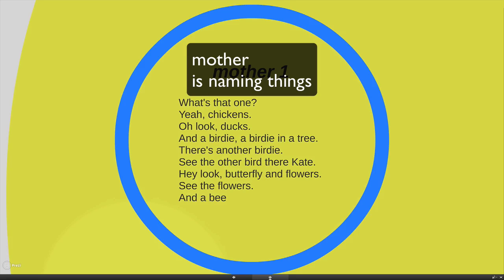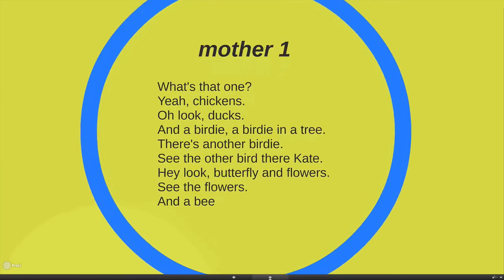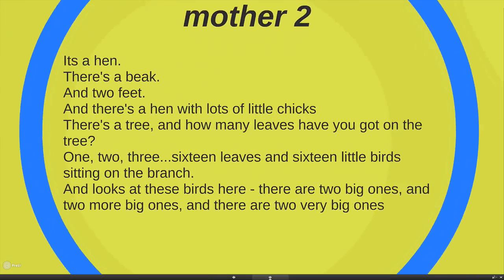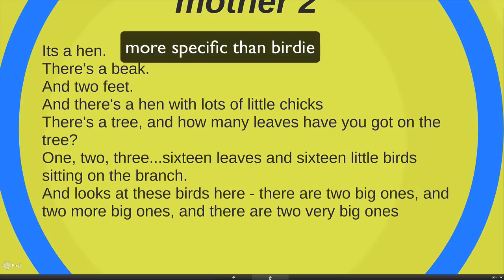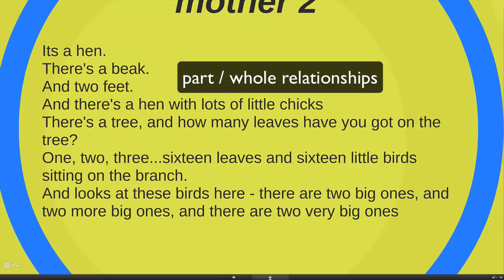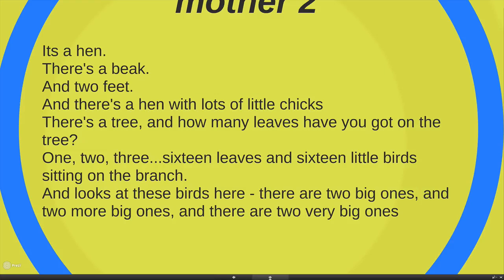But the second mother, she does a very different job of it. Firstly, she starts off and says, look, it's a hen. A hen is kind of like, that's quite interesting. You've got a hen and then you've got chicks, but she's given a specific term for the hen. And then she looks more closely at the hen and gives a part of the hen, a beak, and then another part of the hen, two feet. But on top of that, she's used the number two to show that. And then she says, there's a hen with lots of little chicks.